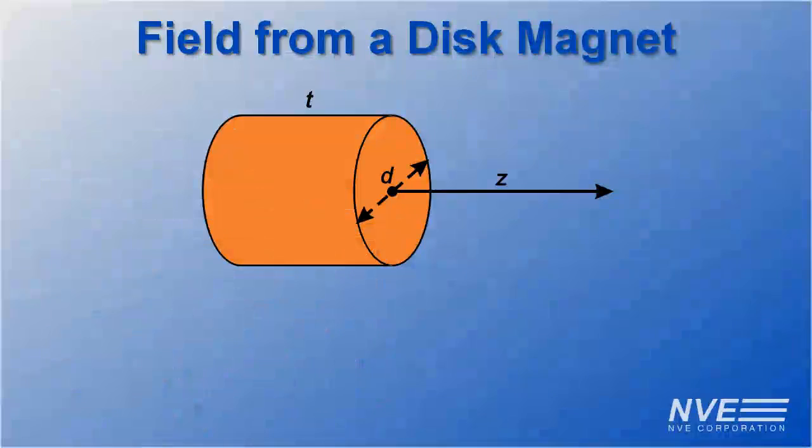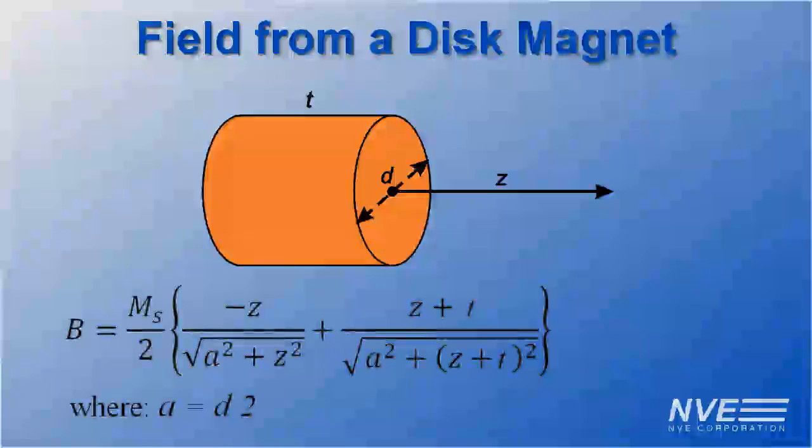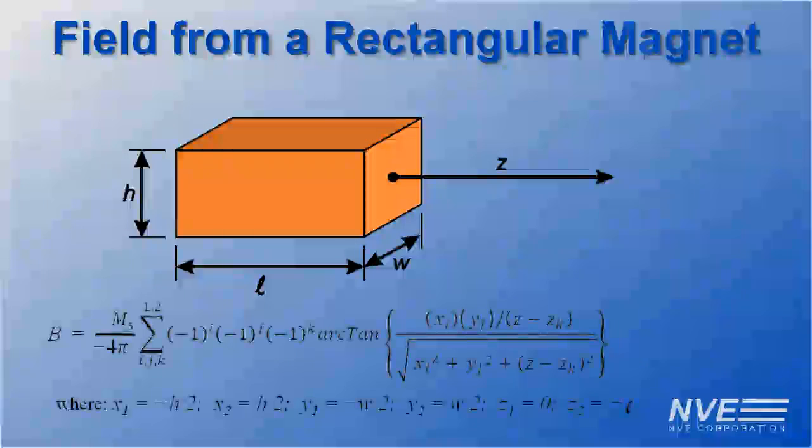Here's how the app works. For cylindrical magnets, it uses this formula. And this is the formula for rectangular magnets.